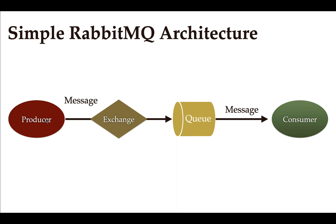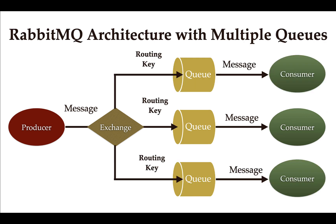The producer will send a message first to the exchange, and then the exchange will route that message to the queue, and then the consumer will consume or read that message from the queue. This is the simple RabbitMQ architecture. But for a complex application, we need to create multiple queues in a RabbitMQ broker.